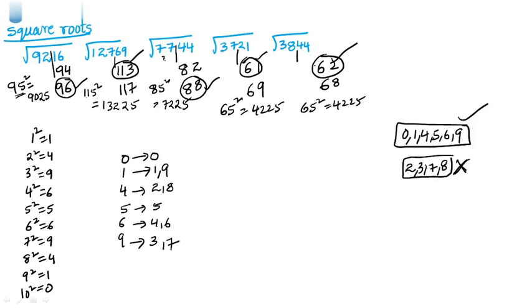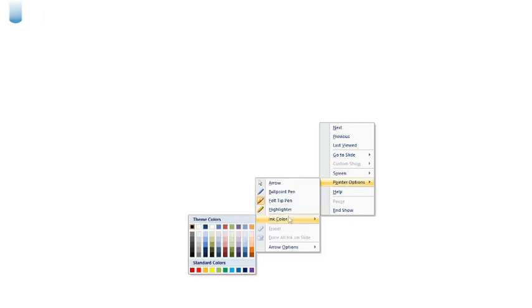Now moving on to cube roots. For any perfect square in competitive exam or banking exam, use the elimination approach. Now for cube roots — cube roots are easier than square roots because in cube roots the possibilities are constant, unlike square roots which have multiple possibilities. Cube roots have a fixed custom pattern.